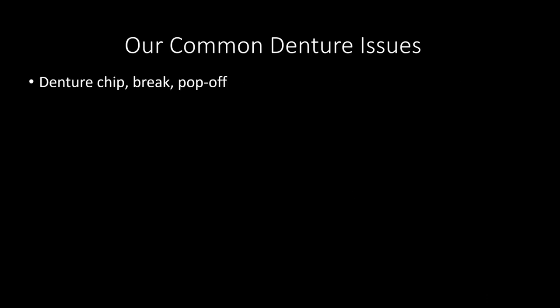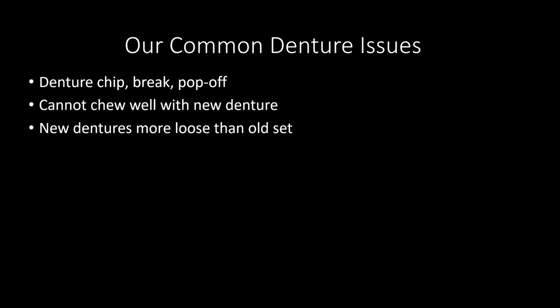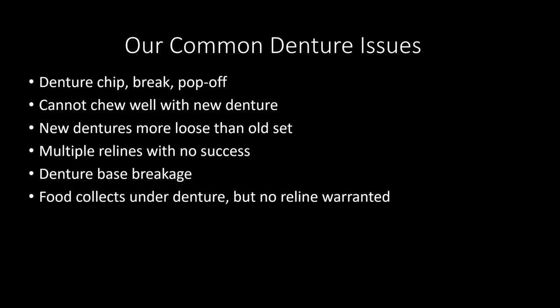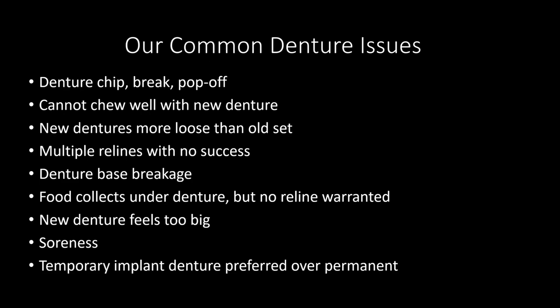What are our common denture issues? Denture teeth that don't chew well. New dentures more loose than the old set. Multiple relines with no success. Denture base breaking. Food collecting under the denture when a reline isn't warranted. The new denture feeling too big. Soreness and pressure points. And the temporary implant denture being preferred over the permanent one.